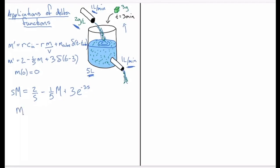So that is the transform and now we solve this for M. So I'm going to have capital M on this side and that's going to be equal to 2 over S plus 3e to the minus 3S all divided by S plus 1 fifth. And so I can write that as two separate terms: 2 over S times S plus 1 fifth, plus 3 times e to the minus 3S over S all divided by S plus 1 over 5.